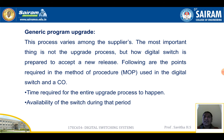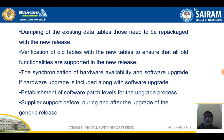Generic program upgrade: this process varies among suppliers. The most important thing is not the upgrade process itself but how the digital switch is prepared to accept a new release. Key points in the method of procedure include: time required for the entire upgrade process; availability of the switch during that period; dumping of existing data tables that need to be repackaged with the new release; verification of old tables with new tables to ensure all old functionalities are supported; synchronization of hardware availability and software upgrade if hardware upgrade is included; establishment of software patch levels for the upgrade process; and supplier support before, during, and after the upgrade of the generic release.